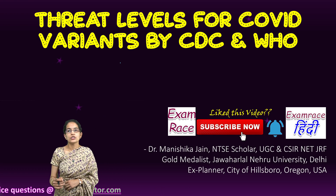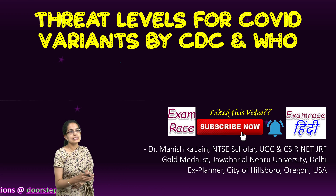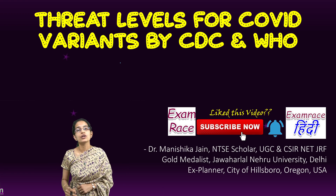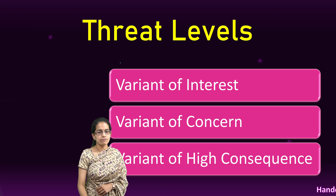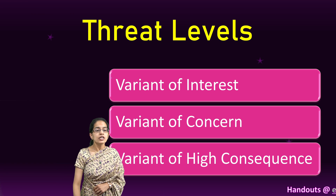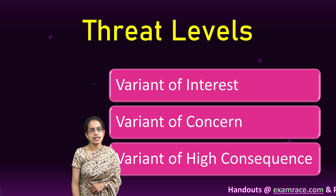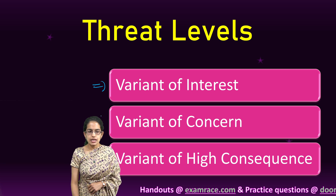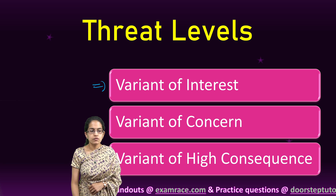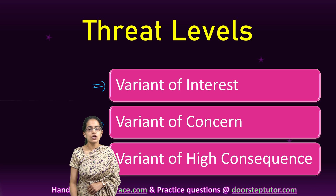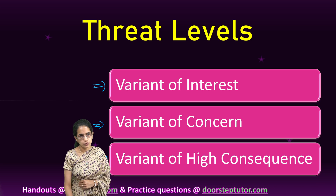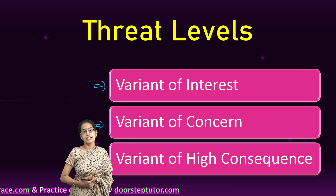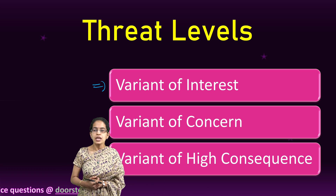Recently, WHO and CDC have laid down threat level warnings for the new variants of COVID that have been coming up. There have been three threat levels introduced: variant of interest, variant of concern, and variant of high consequence. What is the difference and how they are defined is something we would discuss today.